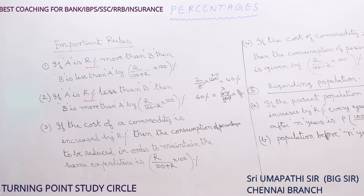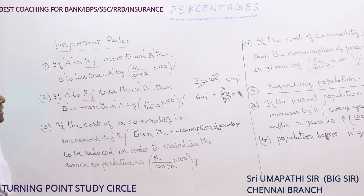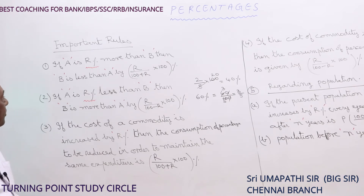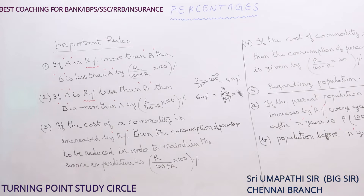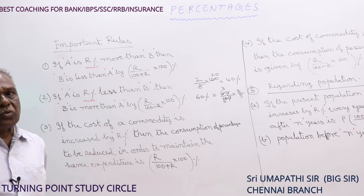The first point is: if A is r% more than B, then B is less than A by r/(100 + r) × 100%. If A is r% less than B, then B is more than A by r/(100 − r) × 100%. If the cost of a commodity is increased by r%, then the consumption percentage to be reduced in order to maintain the same expenditure is given by r/(100 + r) × 100%.